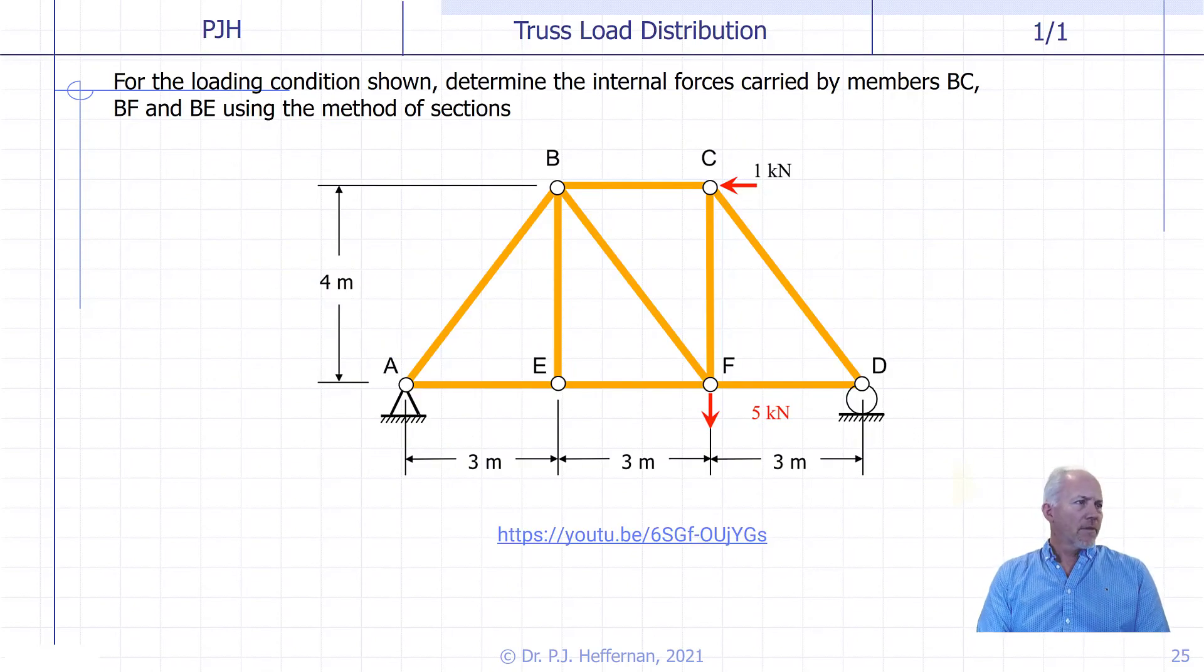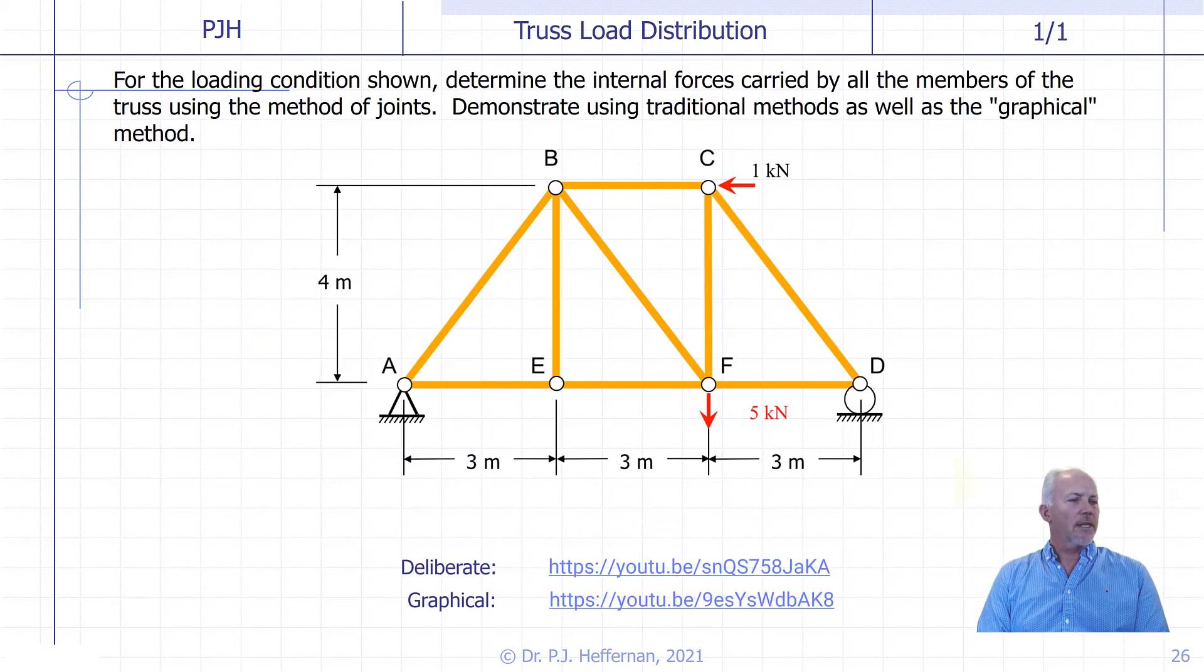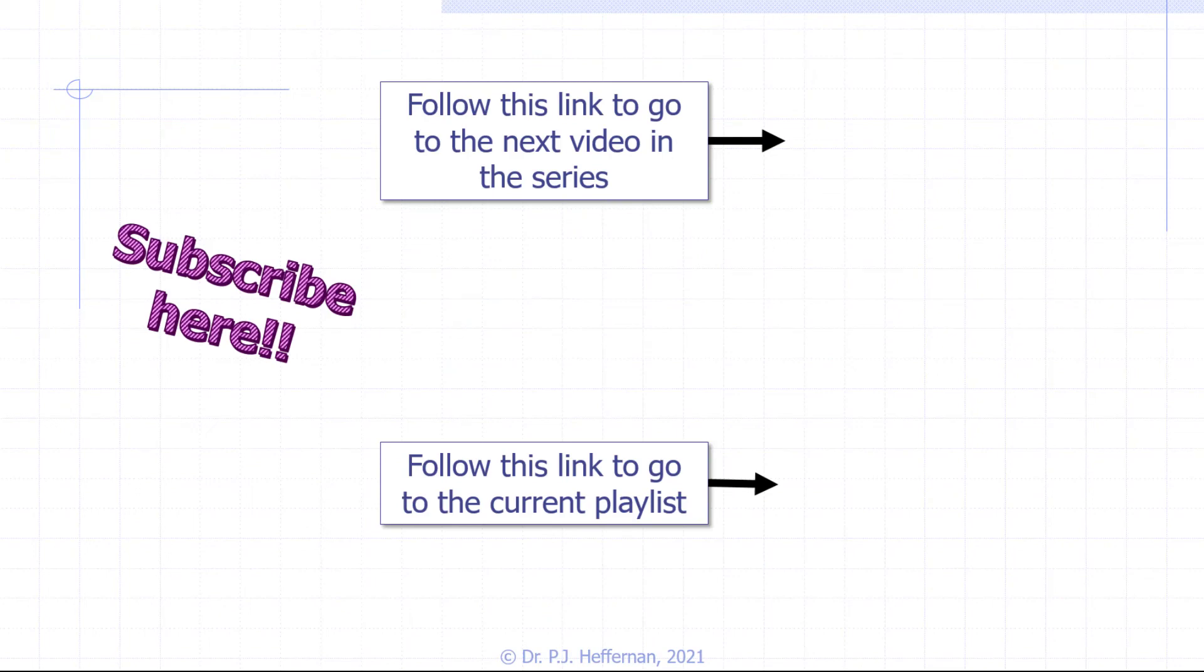Here we have our first example. As a class example, this problem using the method of sections is solved at the link shown below. After you've reviewed this solution, go to these links and look at the same truss solved using the method of joints. It's solved twice: once using the deliberate method, where we isolate each joint, identify in full form the equations of equilibrium for the subsystem, and carry on joint to joint; and then using what I referred to as the graphical method, using a large format picture of the truss to very quickly get the components of each of the truss internal loads.